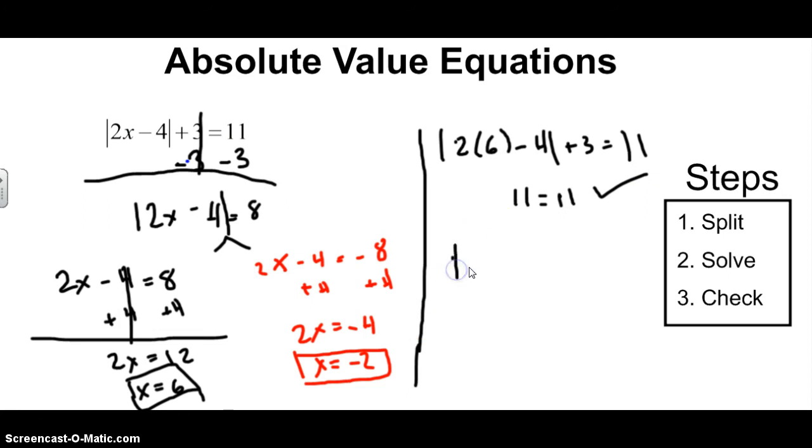Second one. Let's plug in the second one. So this is 2 times negative 2 minus 4, absolute value plus 3 is equal to 11. Let's see, this is negative 8, right? So this gives me the absolute value of negative 8 plus 3 is equal to 11. Well, this gives me positive 8 plus 3, so 11 equals 11. Okay, so both solutions check, and these are our two answers.